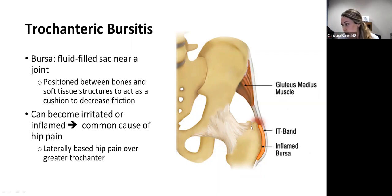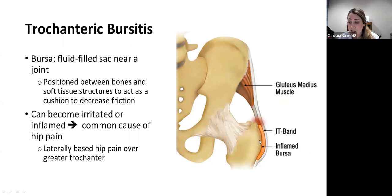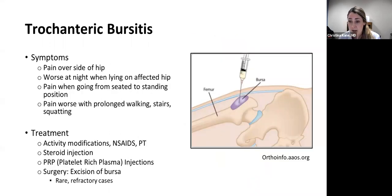The bursa protects the IT band from abrading against the bone, but it can get inflamed and very painful. Trochanteric bursitis is when this trochanteric bursa gets irritated and inflamed, causing pain on the lateral side of the hip — right over the greater trochanter. Symptoms are pain over the side of the hip, worse at night especially when lying on that hip, pain when going from seated to standing, and increased pain with prolonged walking, stairs, and squatting.